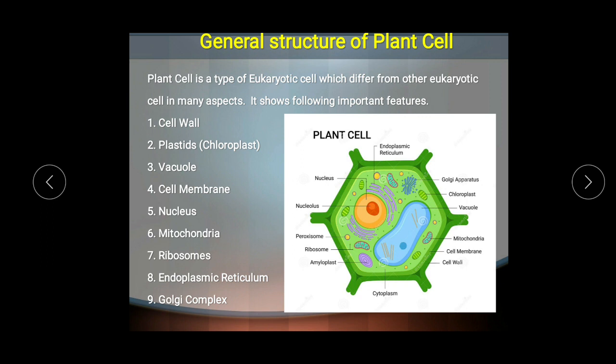The presence of plastids is the most notable component of the plant cell. The chloroplast is the most abundant and commonly occurring plastid. Chloroplast contains chlorophyll, which is a green-colored pigment that absorbs sunlight and allows the plant to make its own food — a process called photosynthesis. Other types of plastids include chromoplast, amyloplast, and leucoplast.